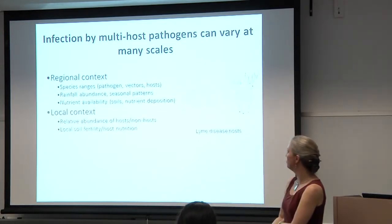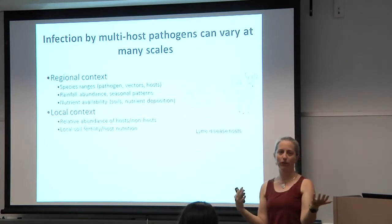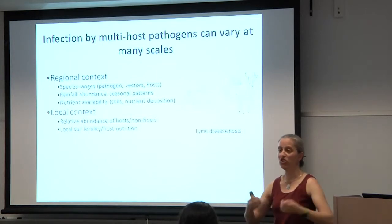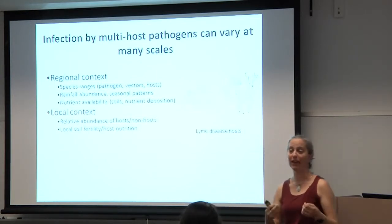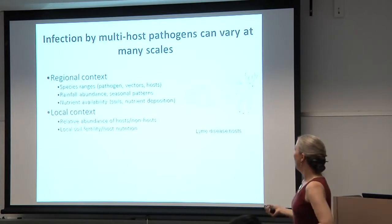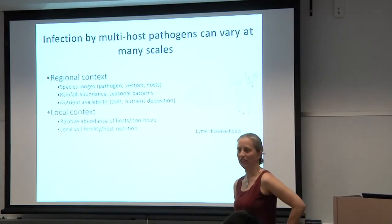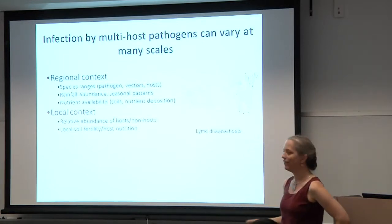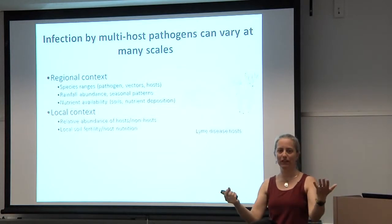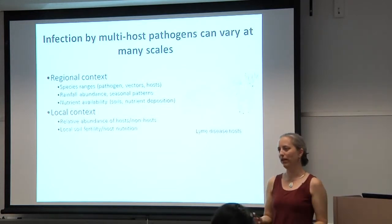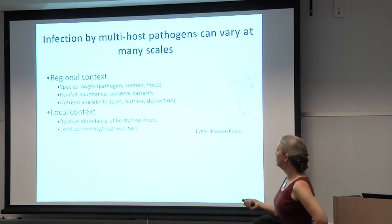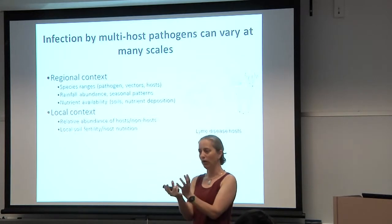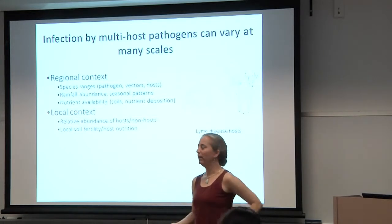Then the local context: this is an example with Lyme disease. We have the relative abundance of hosts — some are very good hosts from the pathogen's perspective, shedding a lot of virus. Some are bad hosts — like humans, actually; we're pretty crummy hosts for Lyme disease, kind of a dead end. And some are non-hosts: if a tick bites a non-host, that pathogen is done. Local soil fertility or host nutrition can play in at local scales to alter the dynamics of infection.